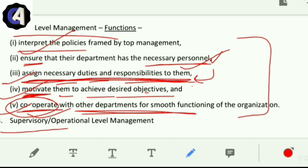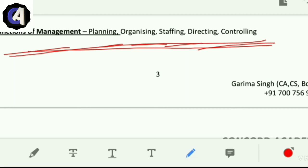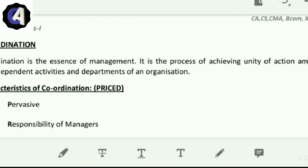The lowest level of management is supervisory or operational level management which looks after the workers. Functions of management are planning, organizing, staffing, directing, and controlling. We will see these in detail in all chapters, so I am not describing them here.